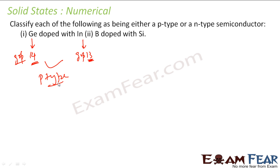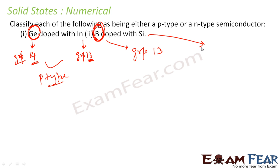Now consider boron doped with silicon — this is a little confusing. Here boron is the main element, belonging to group 13, and silicon is the impurity belonging to group 14. In the normal case we have silicon as the element and boron as the impurity, but in this question boron is the main element and silicon is the impurity.